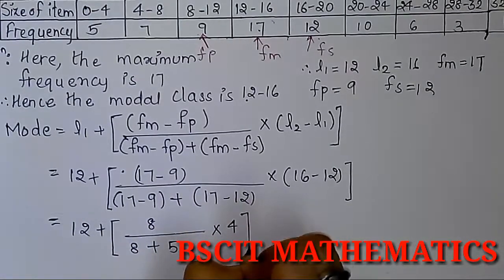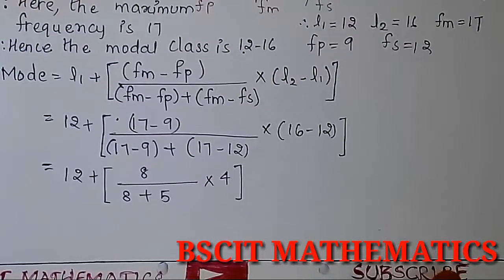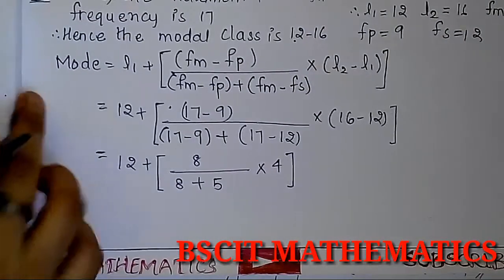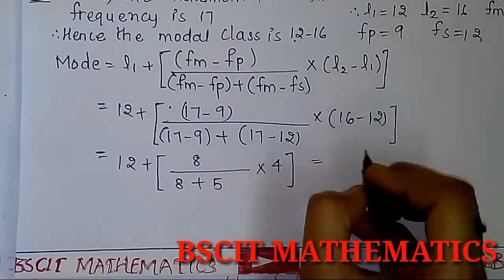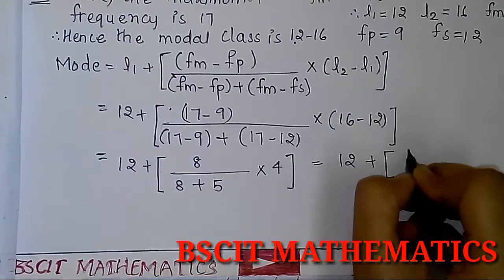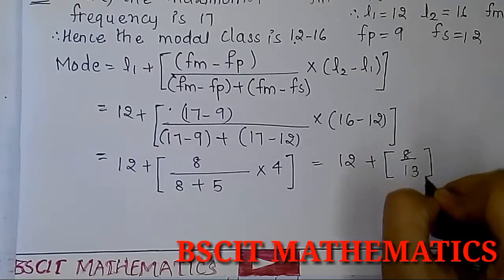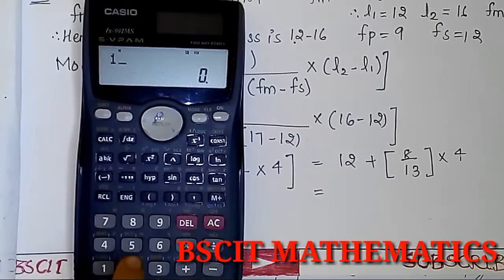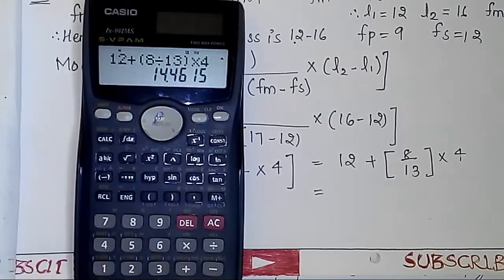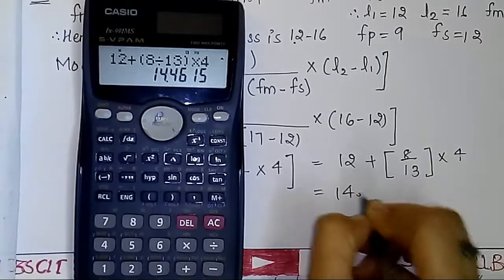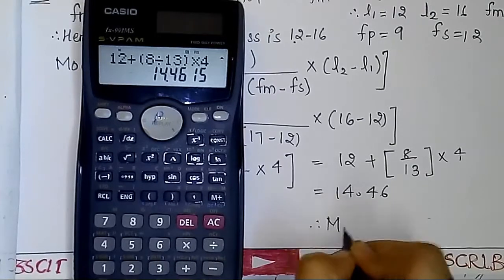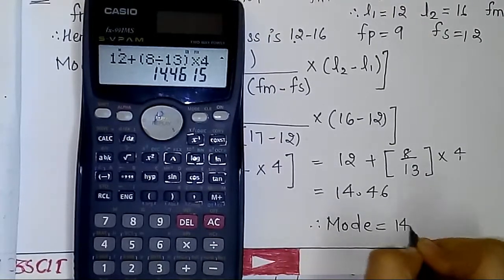So we get 12 plus 8 upon 8 plus 5, into 4, which gives 12 plus 8 upon 13, into 4. Directly substitute all these values into the calculator and you will get the final answer very easily. I have put it in the bracket: 8 divided by 13, and I got 14.4615, so I will take 14.46. So our mode is 14.46.